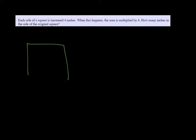So we have a square. All sides are the same. And let's say that the sides are all X. And we add four inches to them. So whatever it was, we're making it four more inches than that.